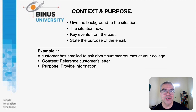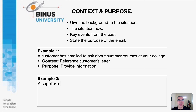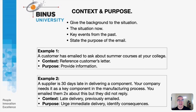Here's example two, which is slightly more complex. A supplier is 30 days late in delivering a component, and your company needs it as a key component in the manufacturing process. You emailed them two times about this but they did not reply. So the context the reader needs to know is: there is a late delivery, and you previously emailed them two times about it. The purpose is to urge immediate delivery and identify the consequences if this is not met.